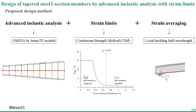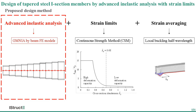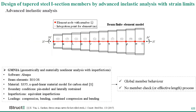Let's talk about the application of the proposed design method for tapered members. This design method mainly includes three parts. The first part is about advanced elastic analysis — using beam finite element models to perform geometrically and materially nonlinear analysis with imperfections, also referred to as GMNIA. Web-tapered members are modeled as stepped members with a number of prismatic segments. Through the advanced elastic analysis, the global member behavior can be directly captured, so individual processes for member check are not required.